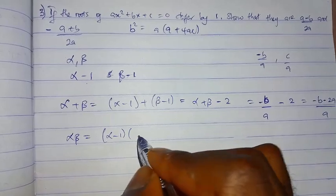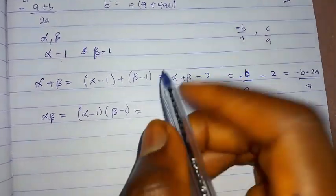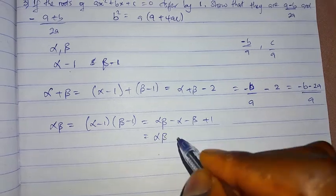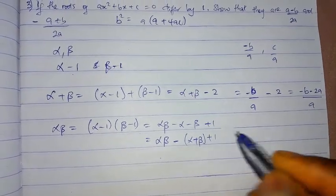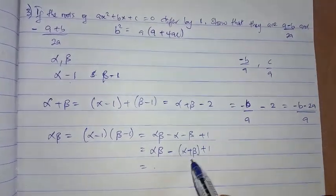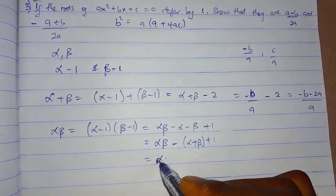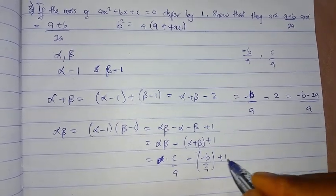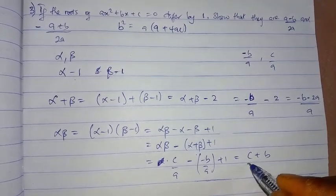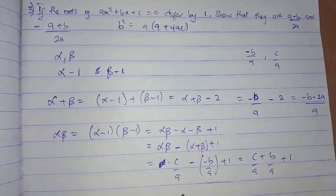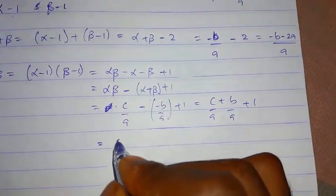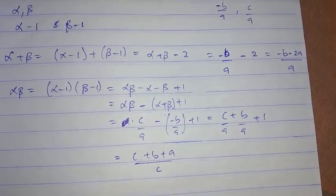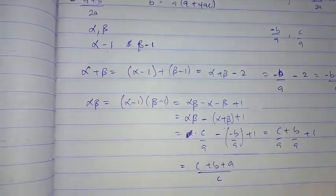For the product of roots: (alpha − 1)(beta − 1) expands to alpha·beta minus alpha minus beta plus 1, which equals alpha·beta minus (alpha + beta) plus 1. Substituting: alpha·beta is c over a and alpha plus beta is minus b over a. This gives (c over a) plus (b over a) plus 1, and taking LCM gives (c + b + a) over a.